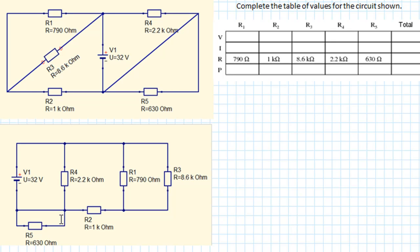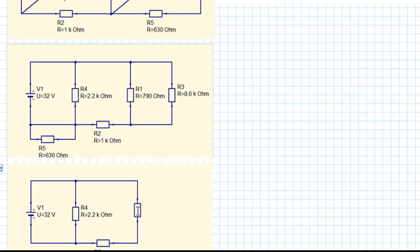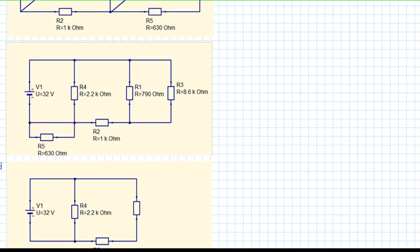Now it makes it much easier to start simplifying. I would recommend when you're doing this that you draw the diagrams as you go through the simplification process, because if you don't do that you're going to get in a tangle with it. So first thing we can do is look at these two resistors here which are in parallel, and we can simplify by using one resistor to replace both R1 and R3. R5, because we've determined it has no effect on the circuit at all, has been omitted.